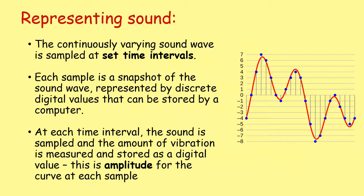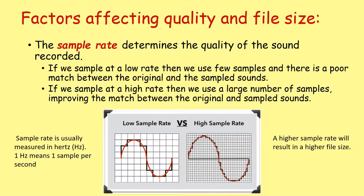The continuously varying sound wave is sampled at set time intervals. Each sample is a snapshot of the sound wave represented by discrete digital values that can be stored by a computer. At each time interval, the sound is sampled, and the amount of vibration is measured and stored as a digital value. This is the amplitude of the curve at each sample. The sample rate determines the quality of the sound recorded.